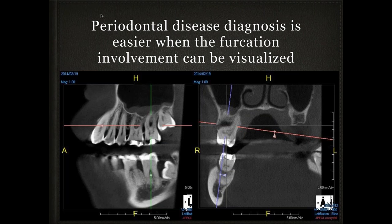Now let's get to periodontics. Periodontal disease is very common in most practices. We still take measurements on everybody, but being able to visualize — the picture on the left shows furcation involvement between the mesiobuccal and distobuccal roots of an upper second molar; then going to the picture on the right you can see the extent of the furcation where it runs into and meets the palatal root. This is visualization I never had before. I really appreciate knowing not just the measurement but visually what that defect looks like. You can also see calculus on the first molar, bone loss on the lower second molar where a third molar is impacted and leaning mesially.